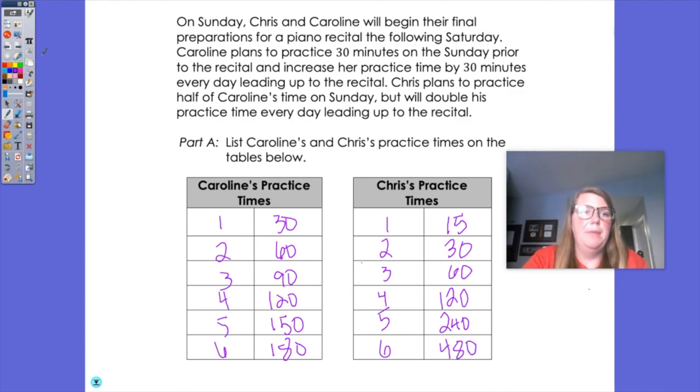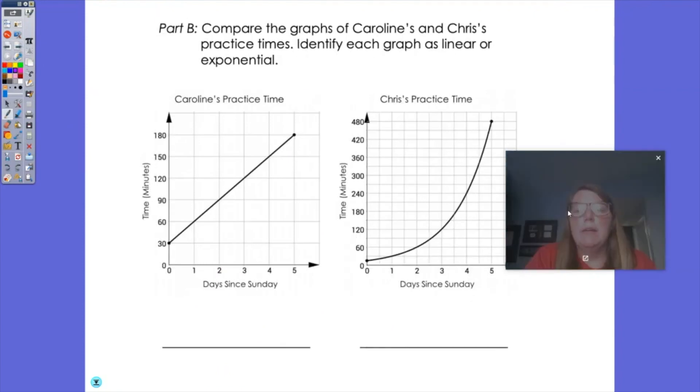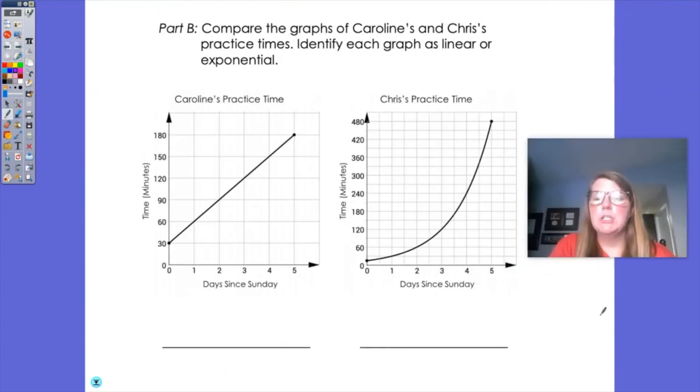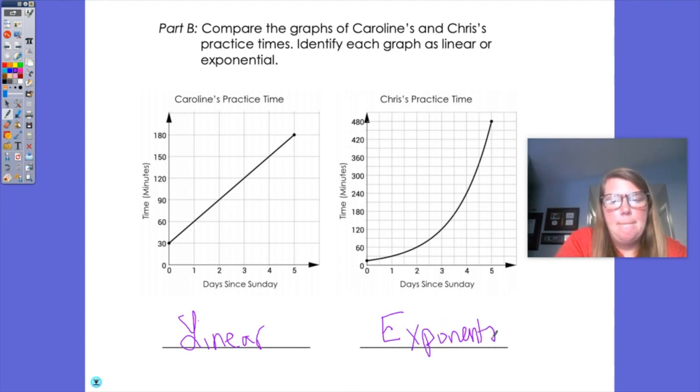All right, so now that we know that their practice times is, let's look at it on a graph. So you'll see that Caroline's practice times form that linear graph because hers is increasing by the same amount each time. And then Chris is doubling his, so his ends up being geometric. So Caroline's is linear, and Chris's is geometric or exponential. So although Chris is starting with less time, eventually he's going to be practicing more, because the amount of practice time is increasing for him each day.